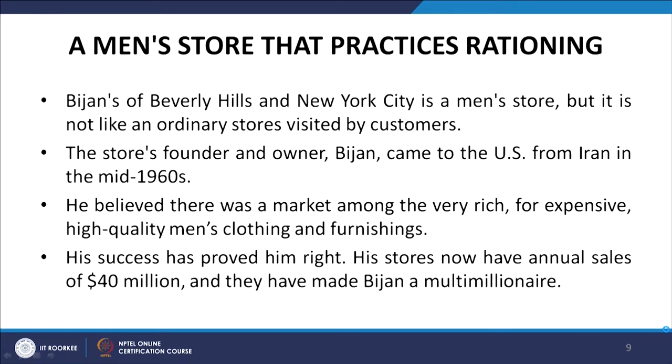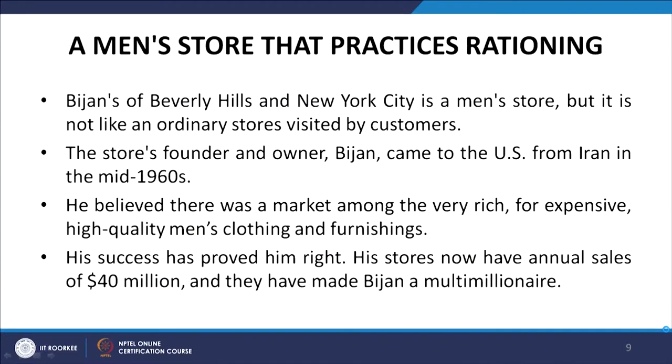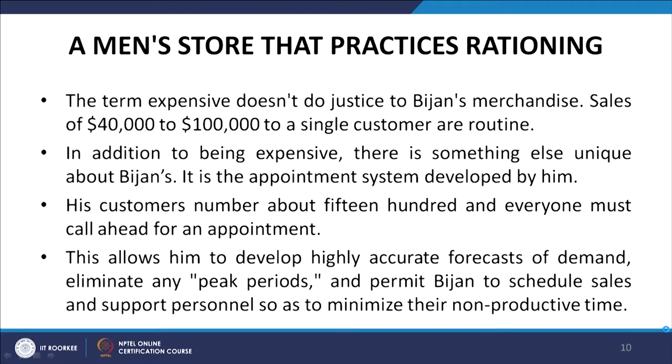An example of rationing is Bijan's of Beverly Hills and New York City, a men's store unlike any ordinary store. Its founder Bijan came to the US from Iran in the mid-1960s believing there was a market among the very rich for expensive, high-quality men's clothing and furnishings. His stores now have annual sales of $40 million. Sales of $40,000 to $100,000 to a single customer are routine.